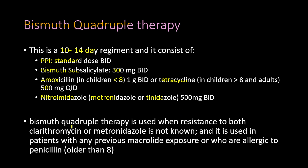Tetracycline cannot be used in children younger than 8 because it affects cartilage and bone growth, potentially causing deformities. The fourth medication is a nitroimidazole — either metronidazole or tinidazole — at 500 mg twice a day. Bismuth quadruple therapy is used when clarithromycin or metronidazole resistance is unknown, in patients with previous macrolide exposure, or in penicillin-allergic patients older than 8.